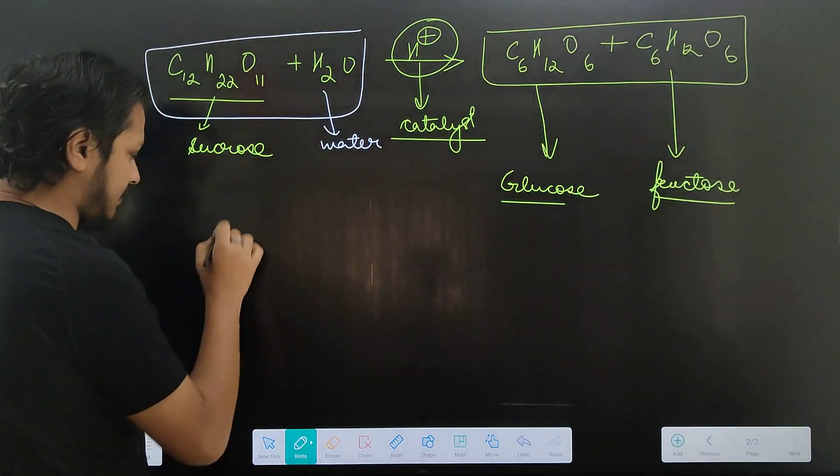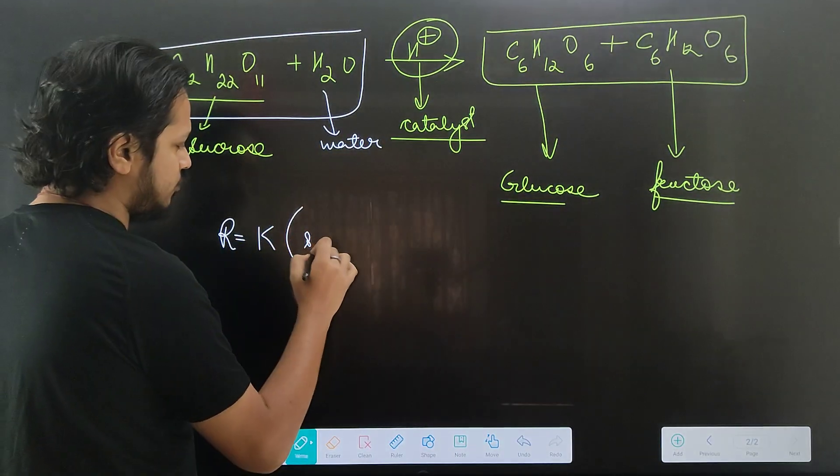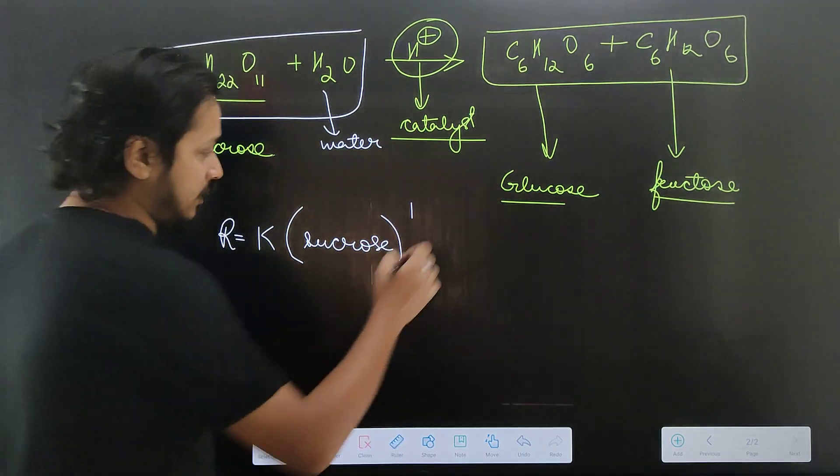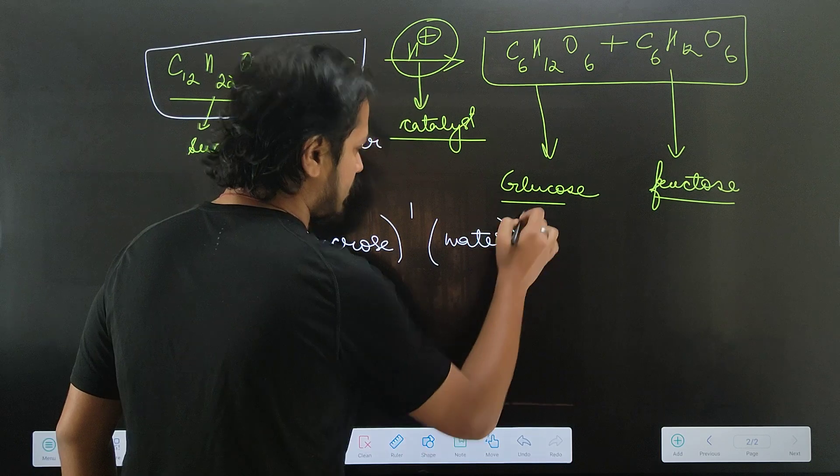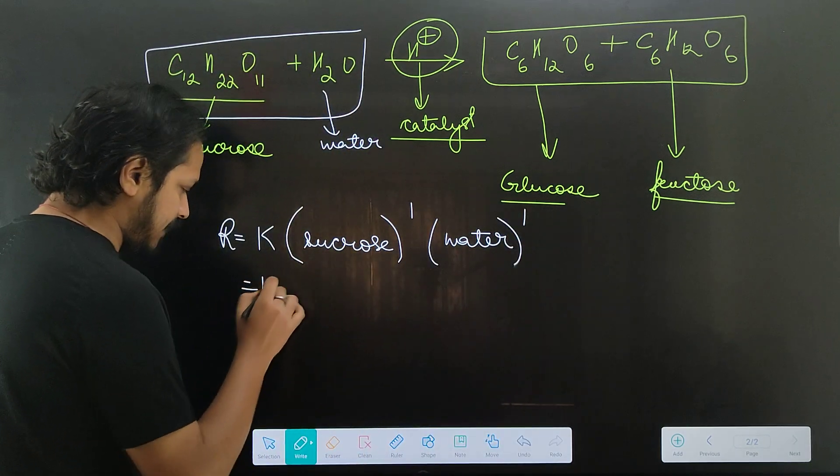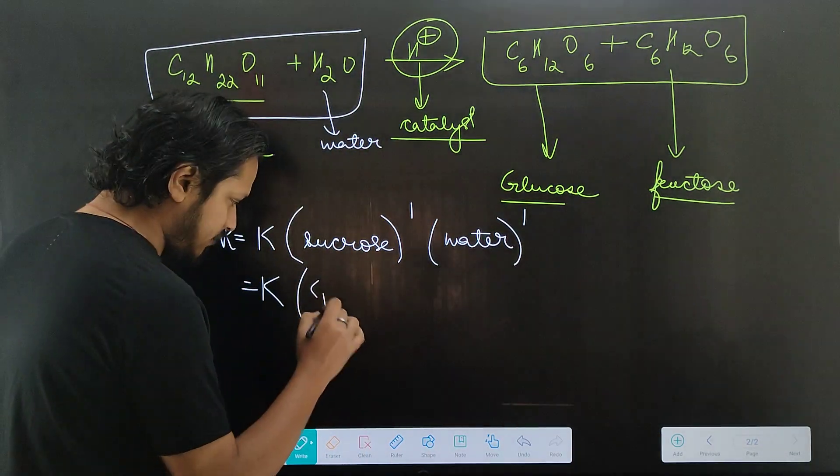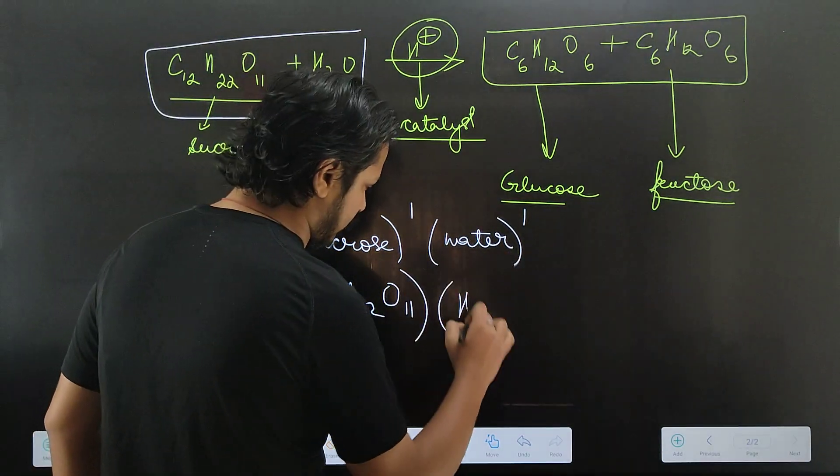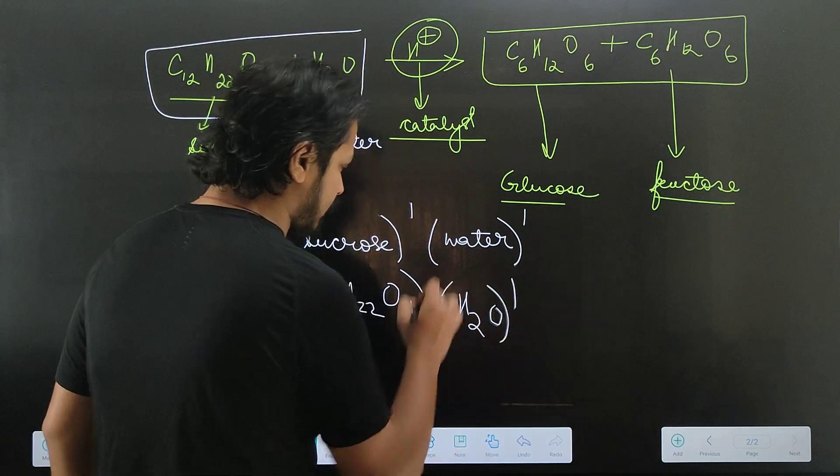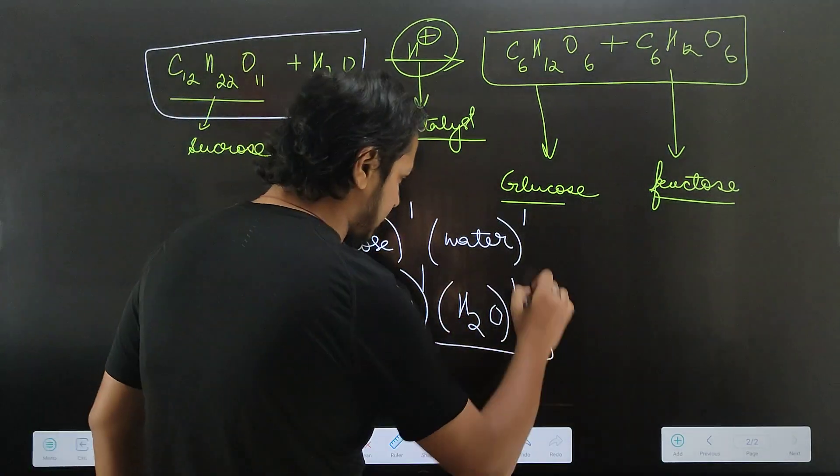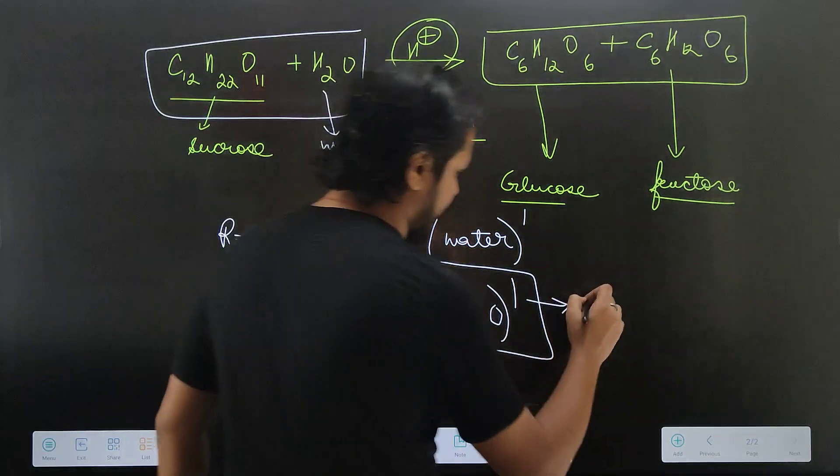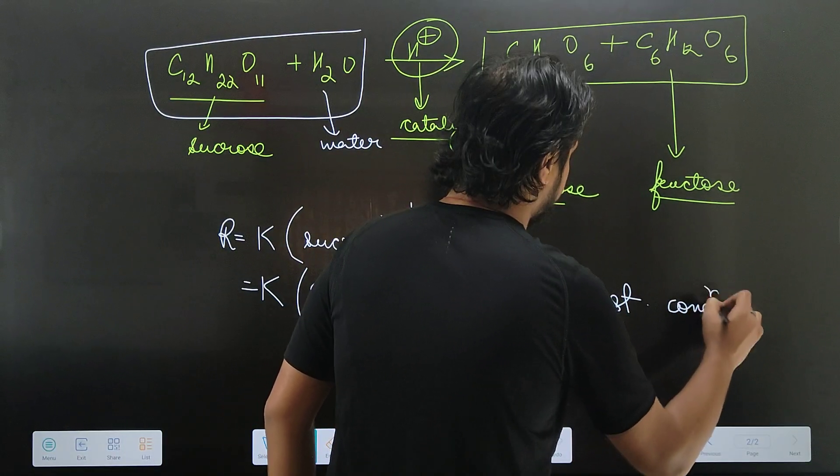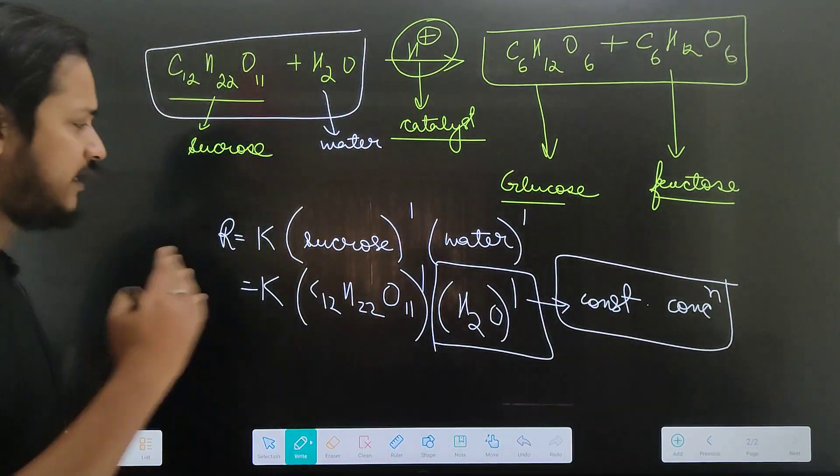Rate equals K times sucrose to the power 1 times water to the power 1. K times C12H22O11 times water. But water is in excess with constant concentration.